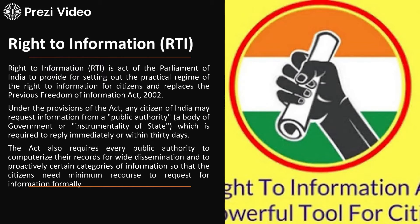The act requires every public authority to computerize their records for wide dissemination — all information and interrelated data should be on the computer — and to proactively publish certain categories of information so that citizens need minimum recourse to formally request information. Most central government offices now accept RTI queries online. You can visit the RTI website, create a profile, post your query online, and they must respond within 30 days.